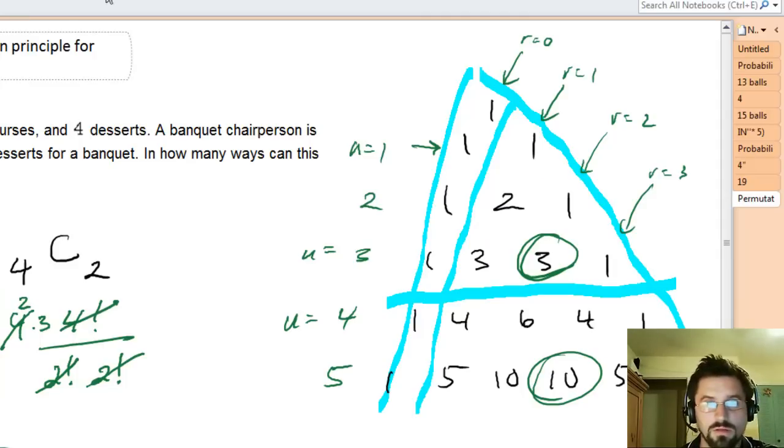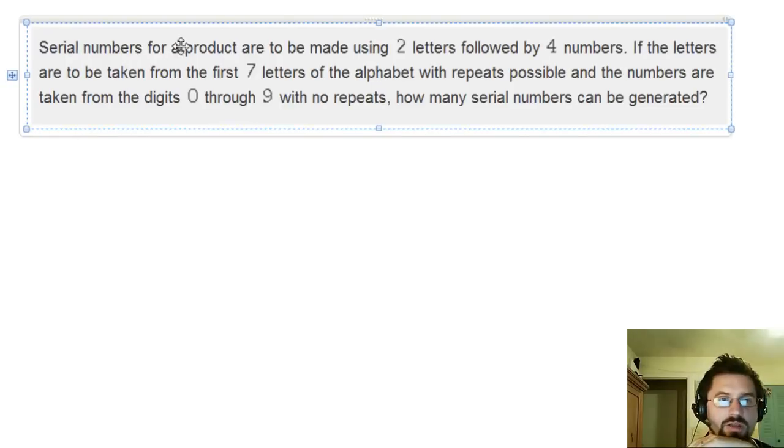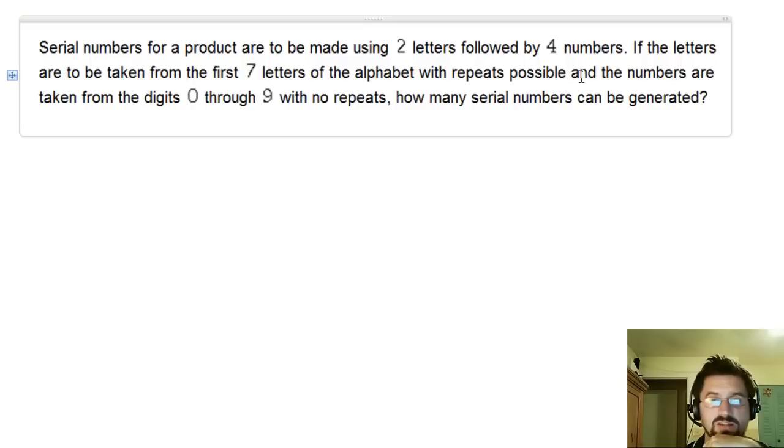Let's do another one of these guys. So, hitting a new page. Serial numbers for a product are to be made using two letters followed by four numbers. If the letters are to be taken from the first seven letters of the alphabet, with repeats possible, and the numbers are taken from the digits zero through nine with no repeats, how many serial numbers can be generated?